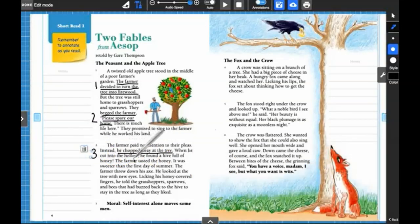Because he chopped away at the tree, what did he find? When he cut into the hollow, he found a hive full of honey. The farmer tasted the honey. When the farmer tasted the honey, that's his action. He's tasting the honey, and that action causes something to happen next. So this is a key event. He tasted the honey, and that taste of honey makes him change his mind. So that's a key event.